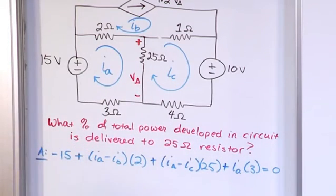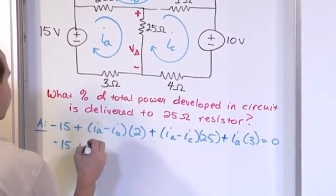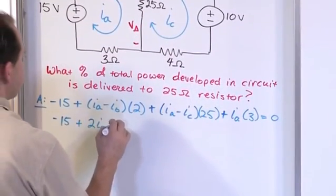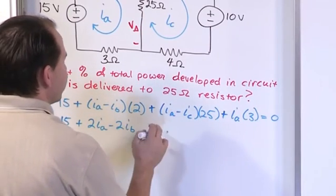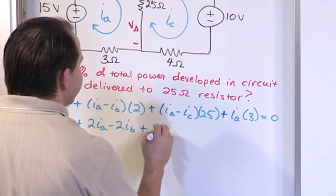So now let's go ahead and simplify this equation. We're going to carry the negative 15. Here we're going to multiply 2 times Ia minus 2 times Ib. And then we'll multiply this through and we'll have 25.